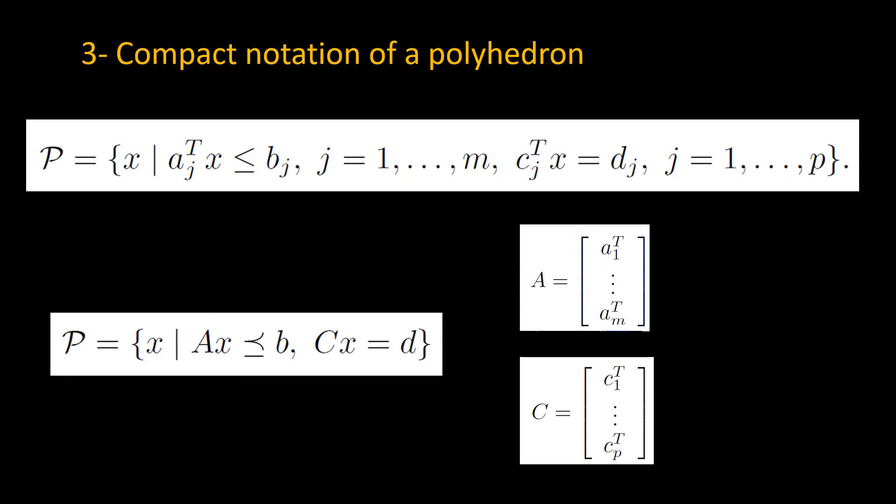Now we want to suppress the notation and write the previous definition in a compact form. It suffices to put every row a_j transpose vector to a matrix here to form matrix A, and we can put every scalar b_j into a column vector b to create that vector b here. We use curl inequality to denote vector inequality or component-wise inequality. We can also put all row vectors c_j transpose into the rows of C to create this big C matrix, and we can use all these d_j's to create the vector.